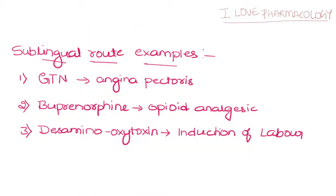Examples of sublingual drugs: GTN (glyceryl trinitrate), used in cases of angina pectoris; buprenorphine, an opioid analgesic; and amino oxytocin, used for induction of labor.